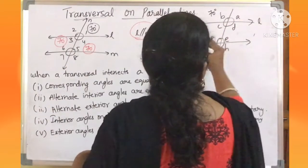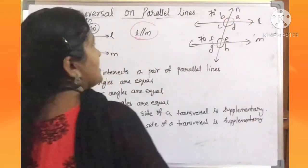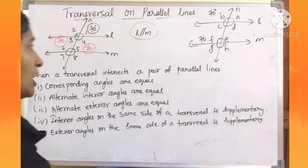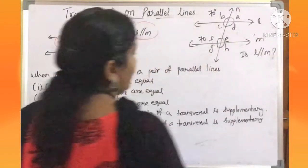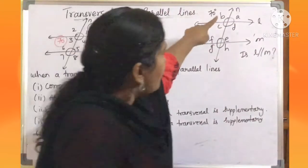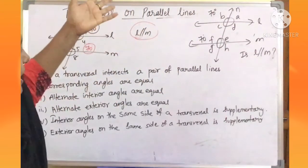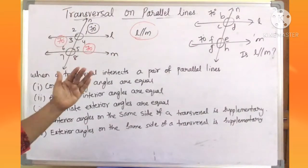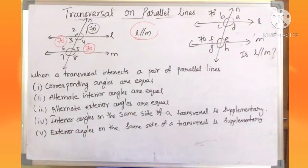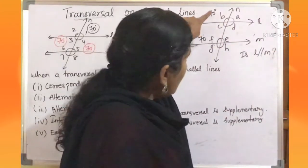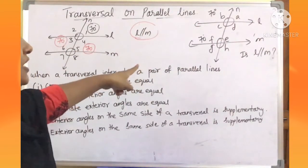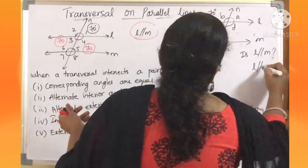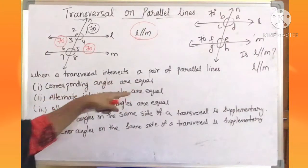Angle B is given as 70 and angle F is given as 70. They will ask: is L parallel to M? To check, we find the relation between B and F. B is exterior, F is interior and they are not adjacent on the same side of the transversal, so B and F form corresponding angles. Since B is 70 and F is 70, corresponding angles are equal. Therefore we can say L is parallel to M. Because when the lines are parallel, corresponding angles are equal. If instead F were 80, then L would not be parallel to M.